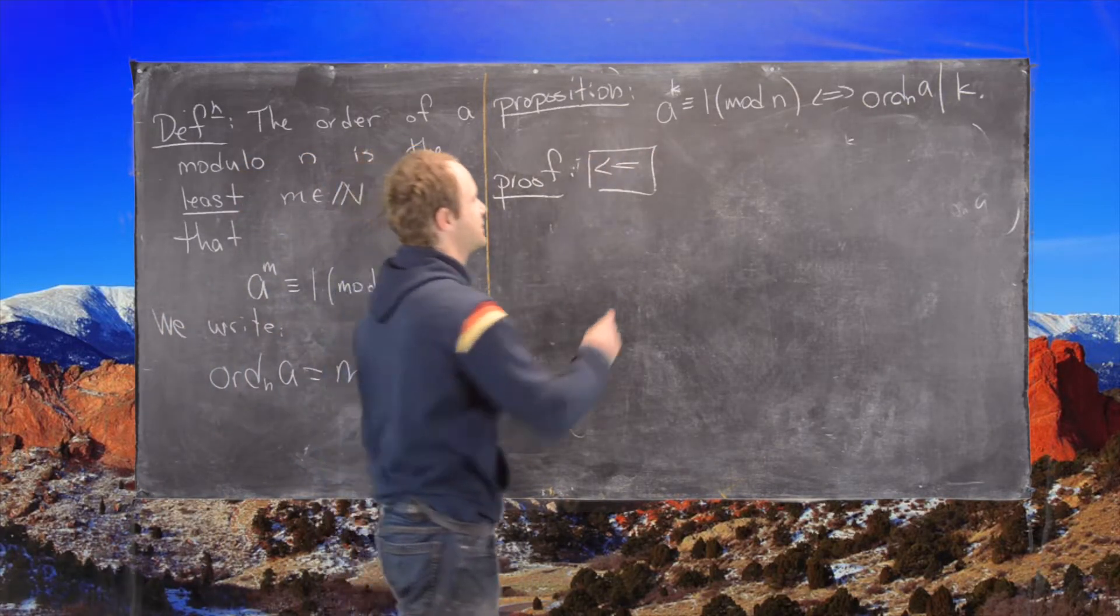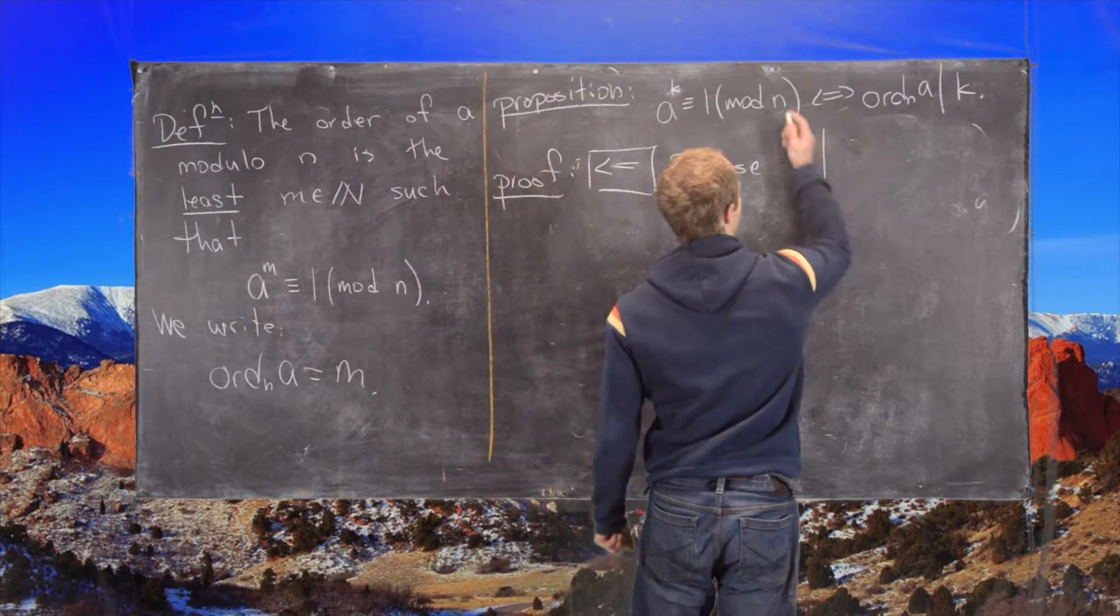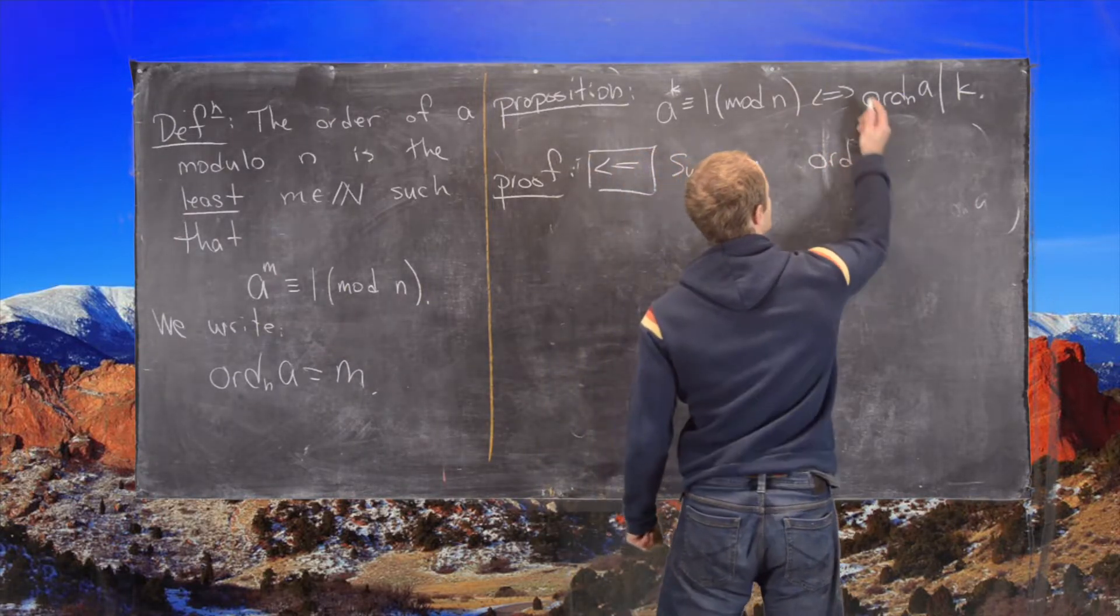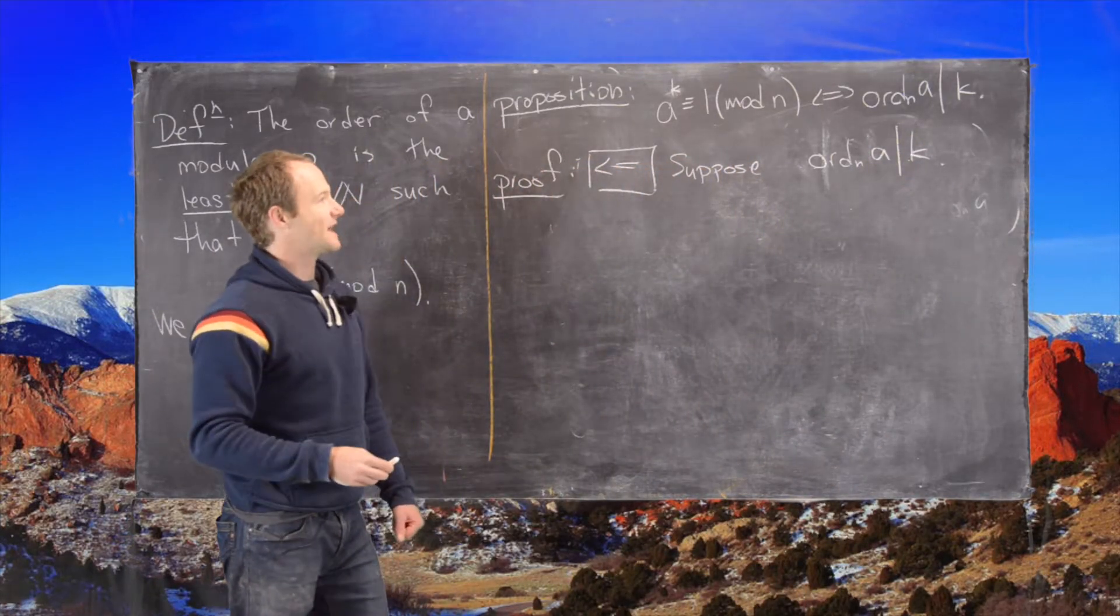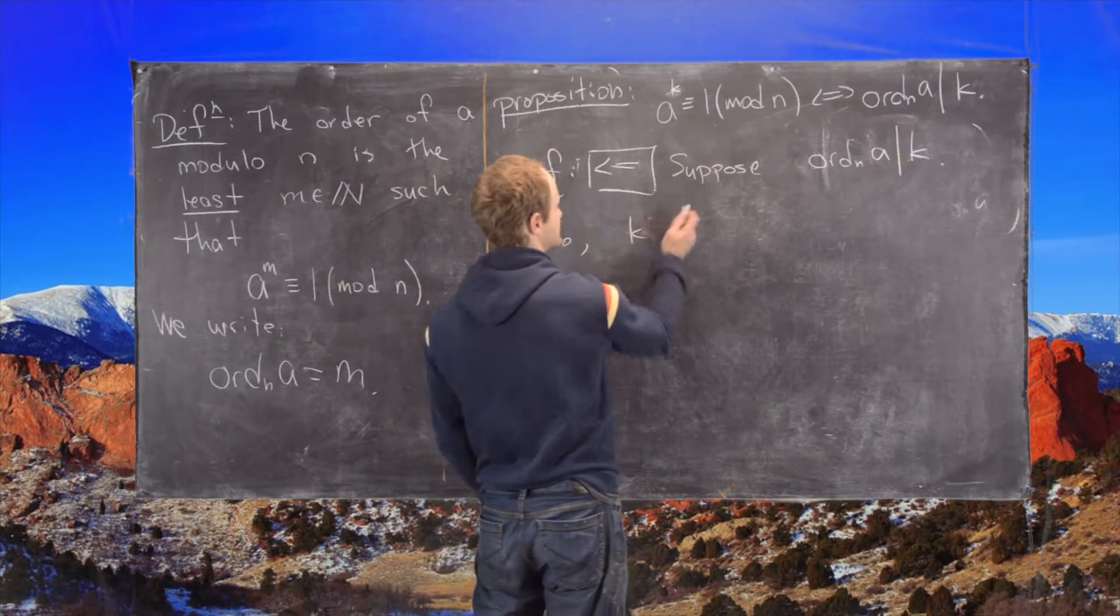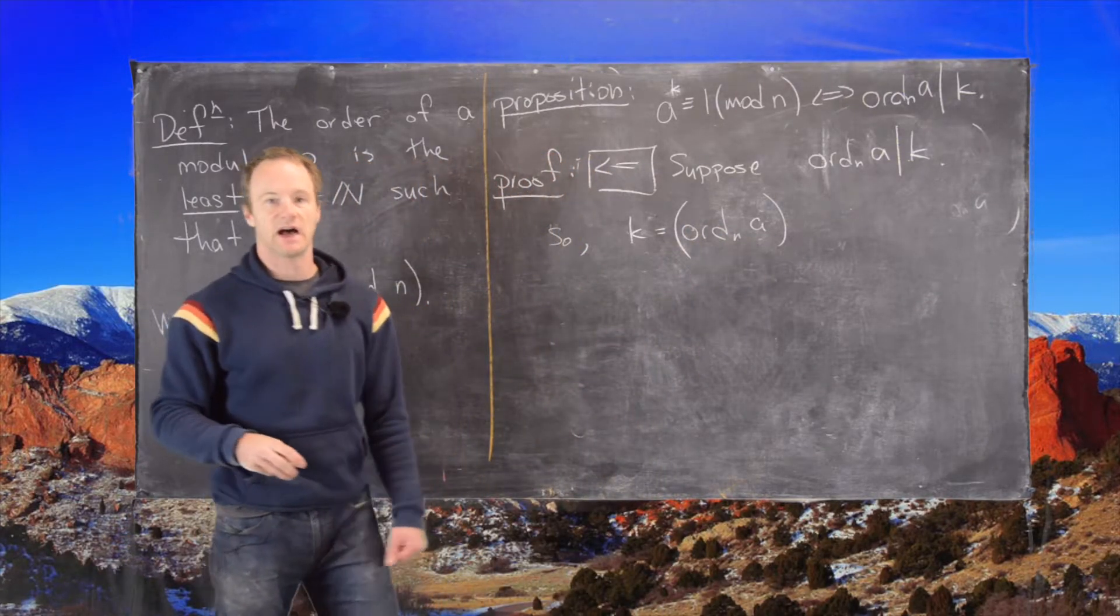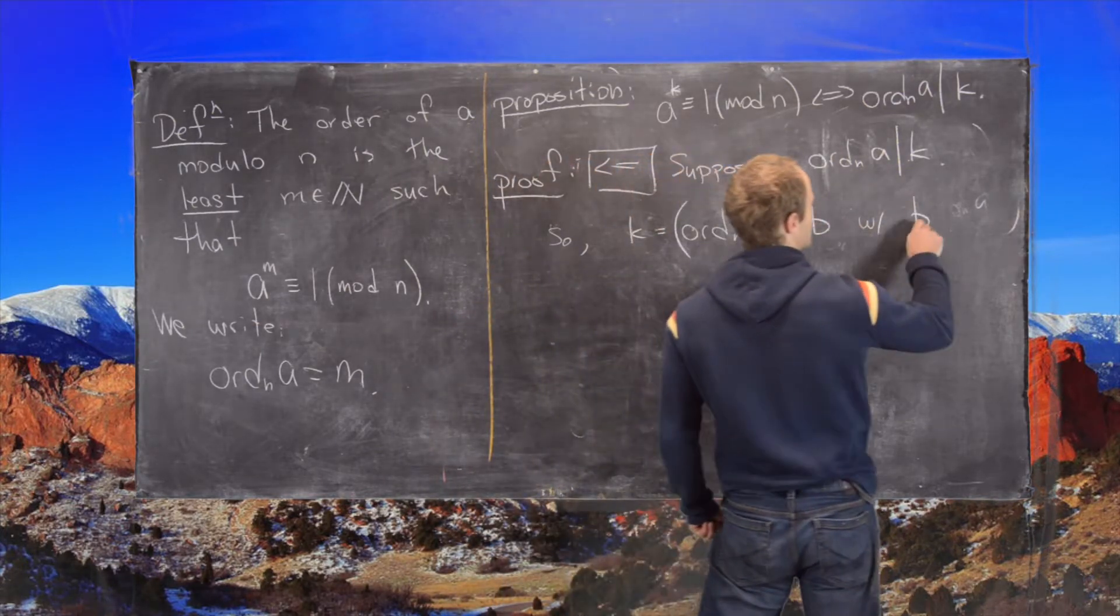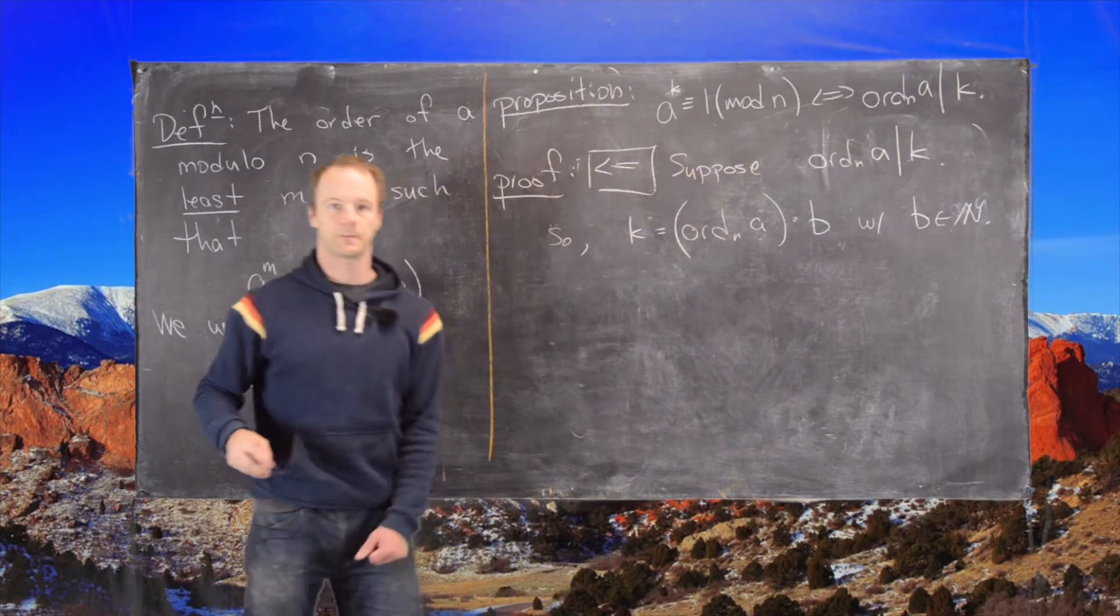So in other words, we want to suppose that the order of a modulo n, in fact, divides k, which that tells us that we can write k equals the order of a modulo n times some other number. So let's say that's times b with b, some natural number.